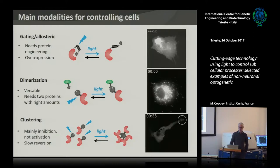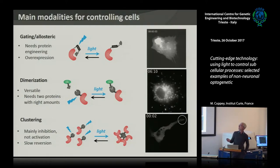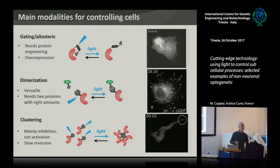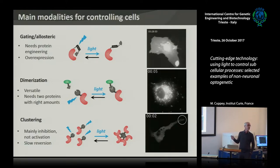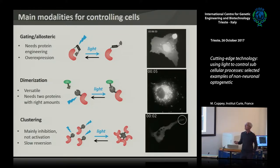After this introduction, I will tell you how you can control cellular and subcellular processes. There are several ways. You use these genetically encoded proteins that are sensitive to light. The first approach is gating a domain within a protein that performs an allosteric change — for example, revealing a binding site for downstream effectors. That is one protein that is genetically encoded.